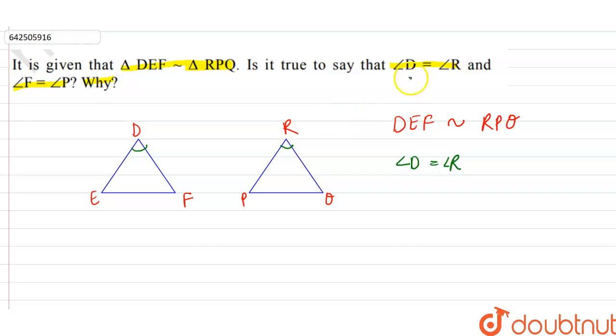So angle D equals angle R - the first part is true. Now for angle P and angle F. Angle F is equal to angle Q, as the corresponding angle of angle F is angle Q. In the question it is given that angle